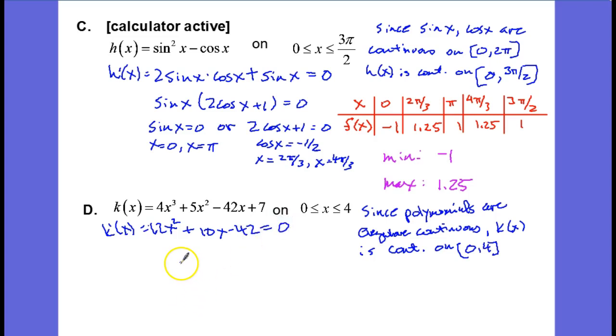And I think I can immediately divide out a 2, and that's going to give me 6x squared plus 5x minus 21 equals 0. And again, using the AC method, we can factor this polynomial.